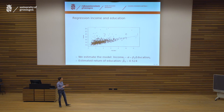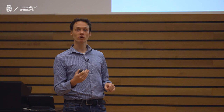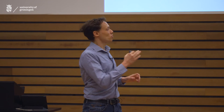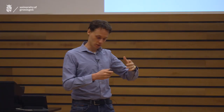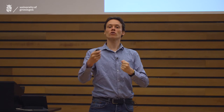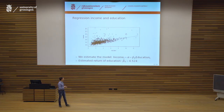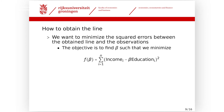So why not take the squared error? That's exactly what we do. The interpretation of the estimated parameter is that an additional year of education gives four and a half thousand euros of annual income. Based on this you might decide it's worthwhile to study. An econometrician is really interested in interpretation — we don't only want to find effects between variables, but also interpret what they mean for us.